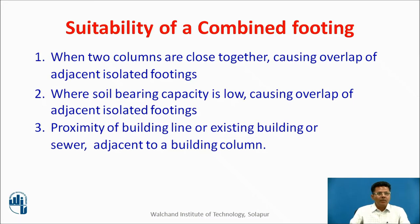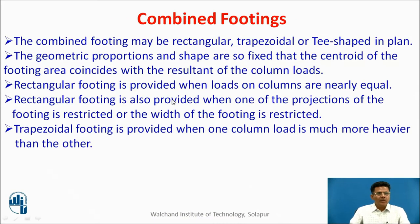When proximity of a building line, existing building, or sewer adjoining a building column is there, then also we need to go for a combined footing. The combined footing may be rectangular, trapezoidal, or T-shaped in plan.